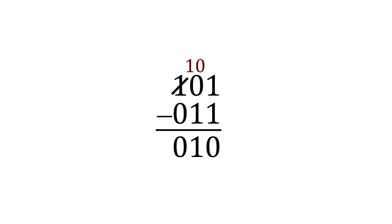101 is the binary number 5, and 011 is the binary number 3. 5 minus 3 is 2, which is the binary number 10. Again, it all works out the way it should in decimal numbers.